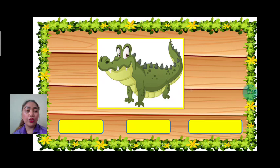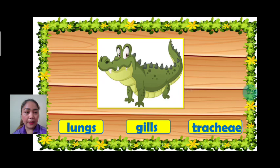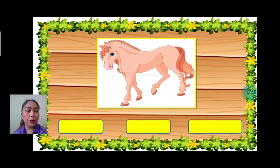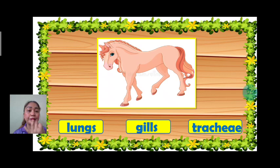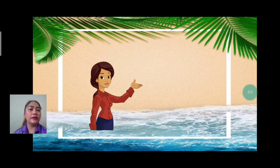Next we have crocodile. Lungs, gills, or trachea? The answer is gills. Good job. Next we have horse. How does a horse breathe? Lungs, gills, or trachea? The answer is lungs. Very good.